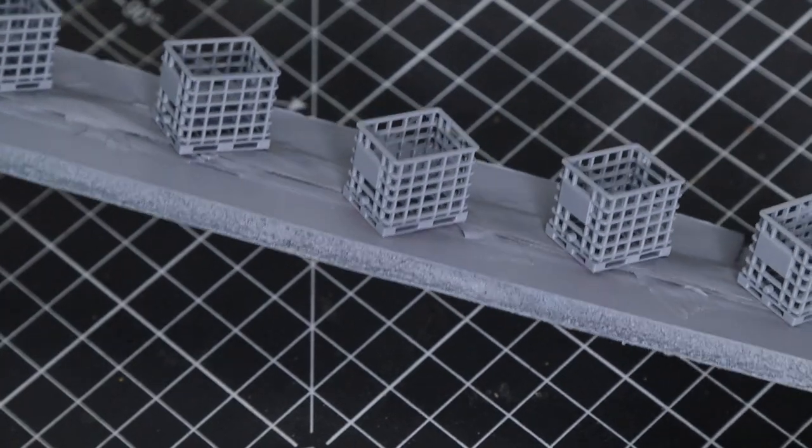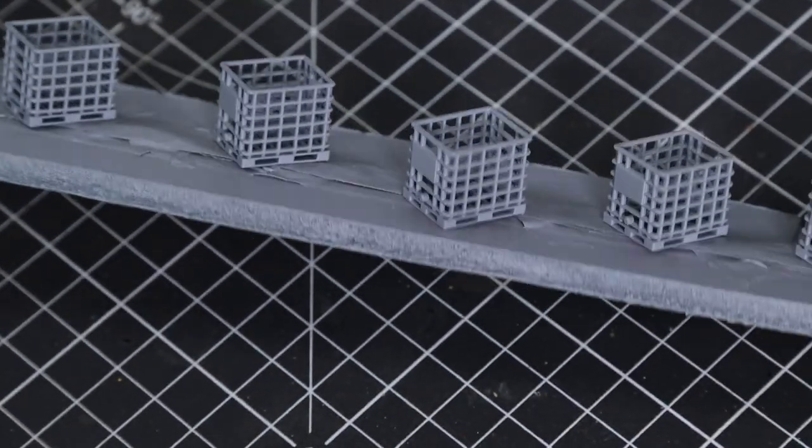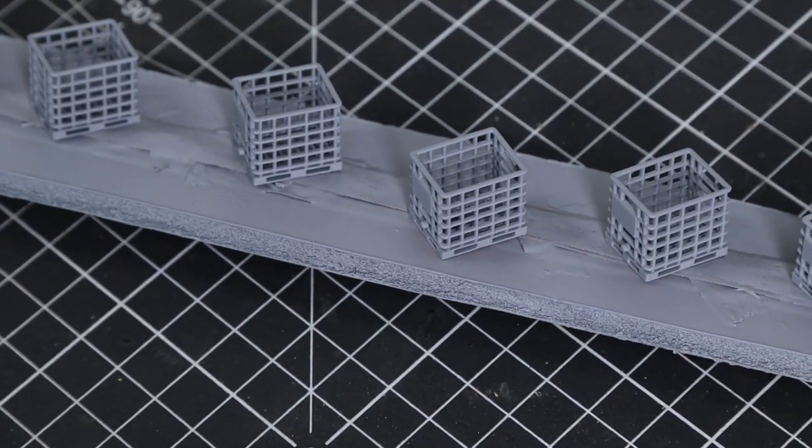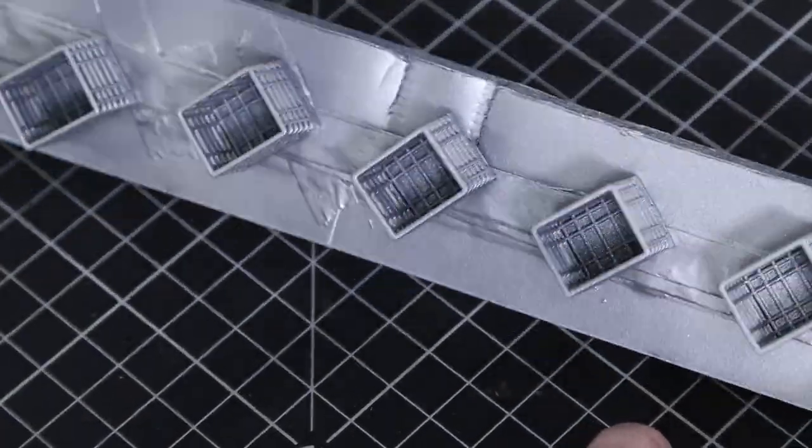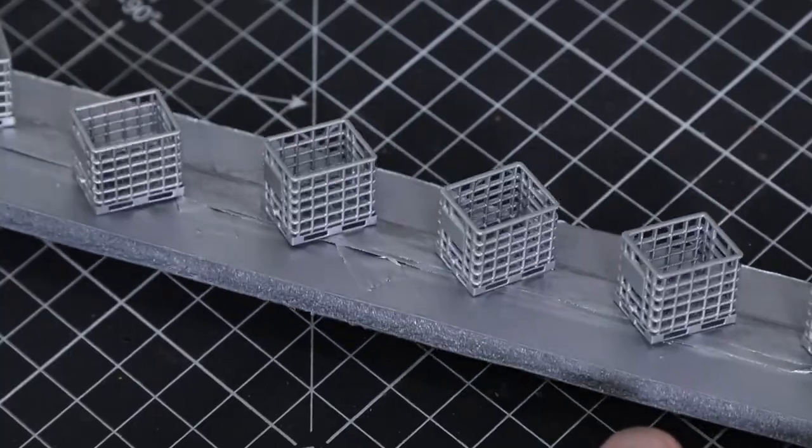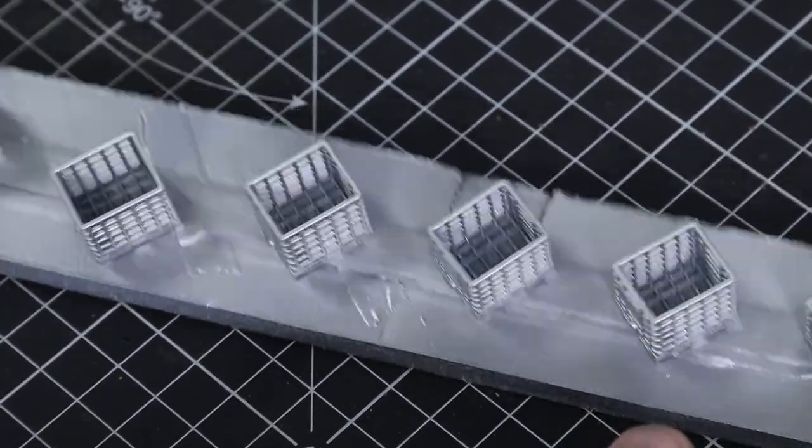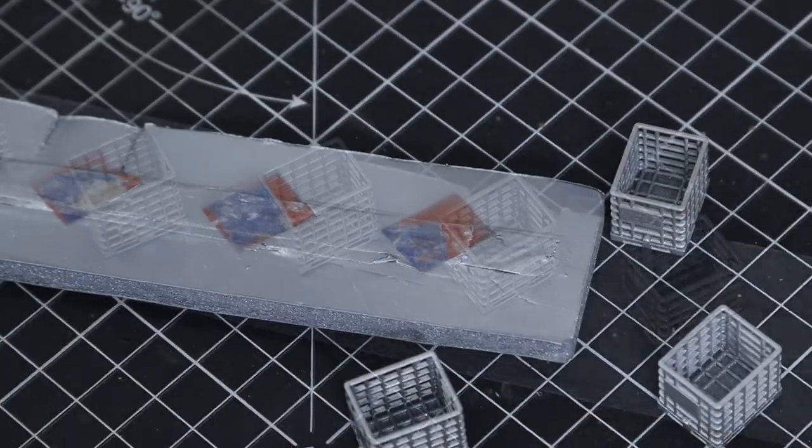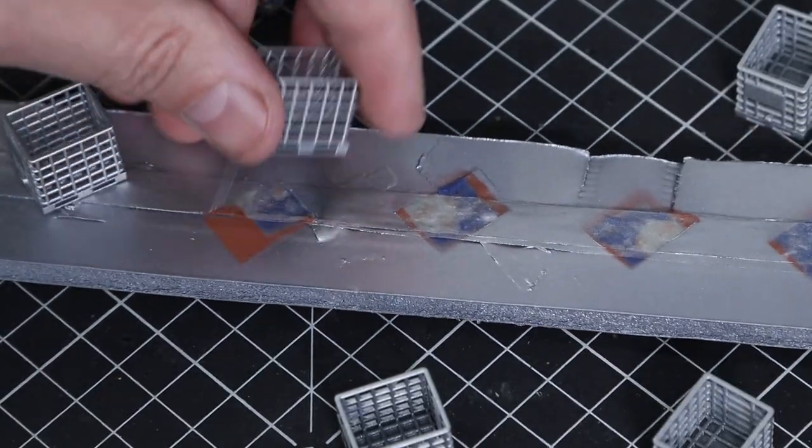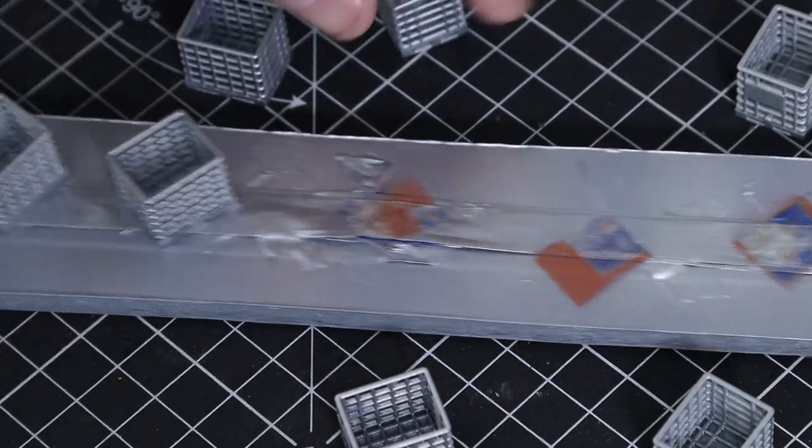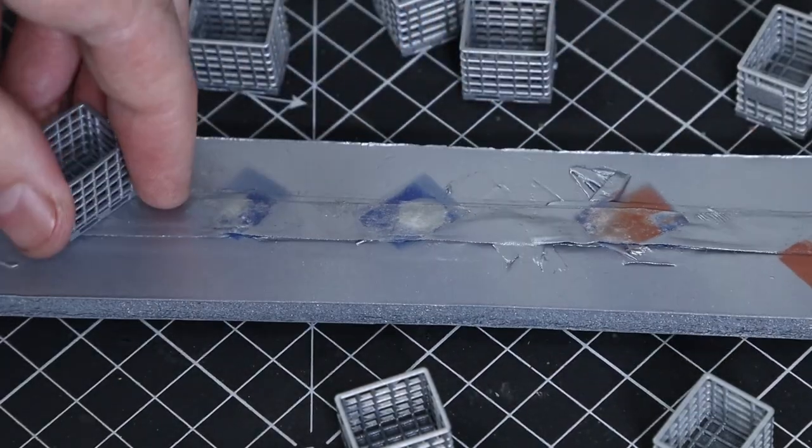I think it's always nice to get the resin primed. This is just a car primer from Halfords in grey—you can use whatever color you choose. Black would work with metallic colors. This is metallic silver, one of the Ford colors. Once they're dry, we pull them off the double-sided tape and they're ready to go.